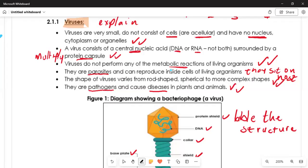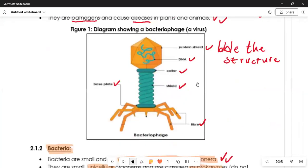Viruses do not perform any metabolic reactions or catabolic reactions. We are saying that they are parasites. Why? Because they sit on a host. They are parasites and can reproduce inside the host. The shape of viruses varies to more complex shapes. We say that they are pathogens, meaning they are viruses and can cause disease in plants and animals. If they are not taken care of properly, they can end up killing both plants and animals.